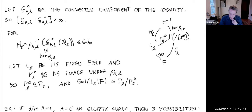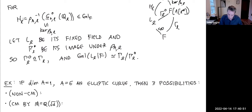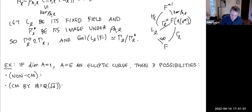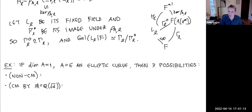It's a good idea to fix ideas by saying what happens for elliptic curves. If the dimension is 1 — so you have an elliptic curve E — there are three possibilities, which depend on complex multiplication. The first is the typical non-CM case.